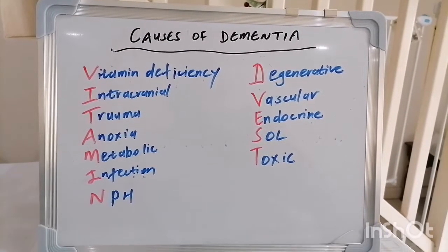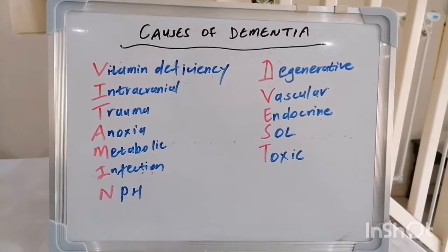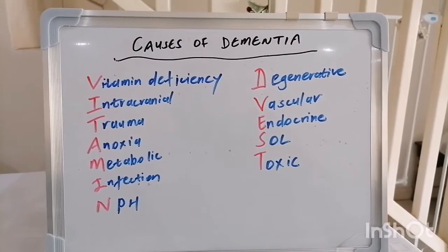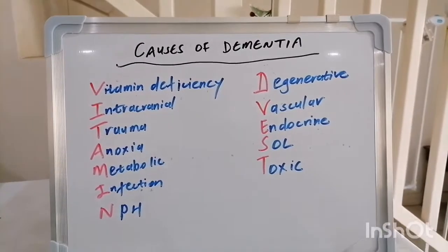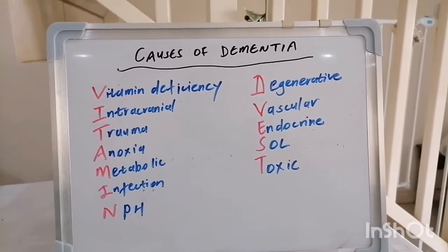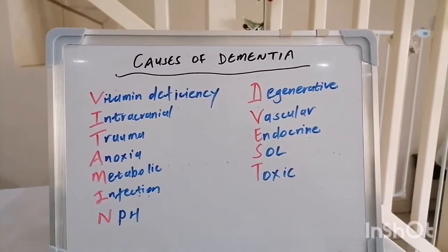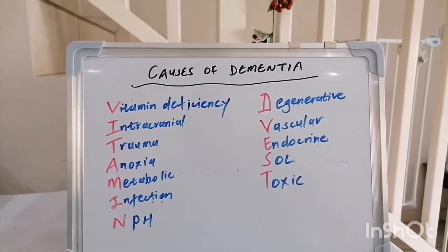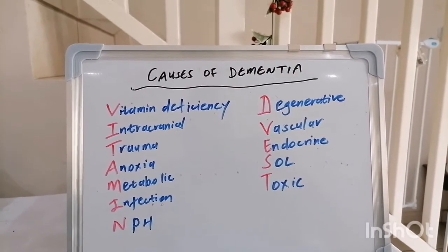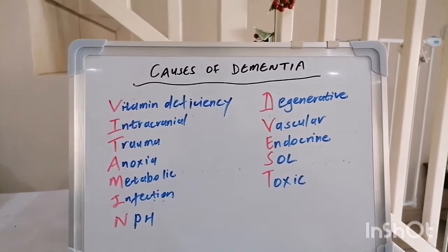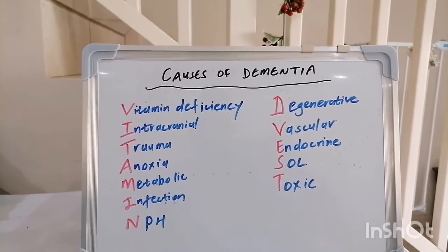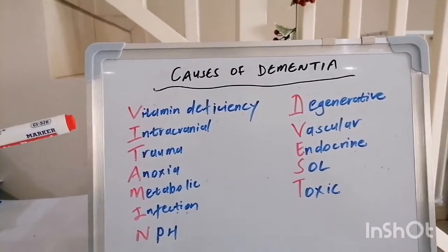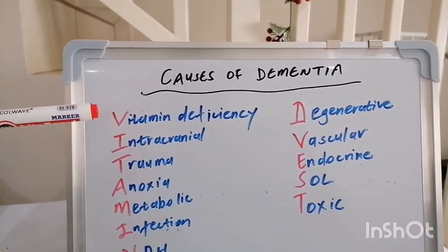Hello and greetings in Jesus' awesome name. Today is our third mnemonic in internal medicine, in the discipline of neurology. We speak to causes of dementia, and the mnemonic is VITAMIN D VEST. Dementia refers to a loss of cognitive function in activities such as thinking, remembering, and reasoning, to such an extent that it interferes with the person's daily life and activities.